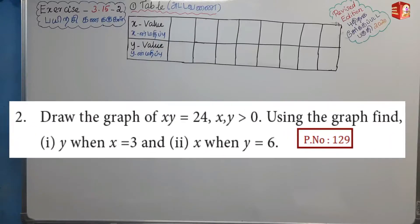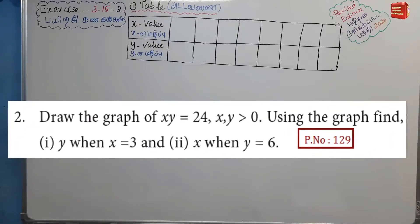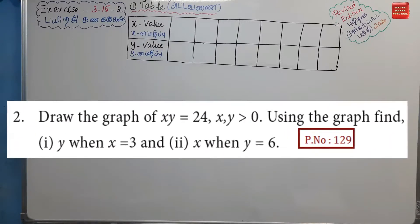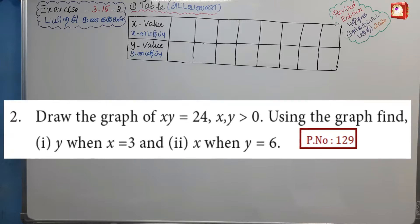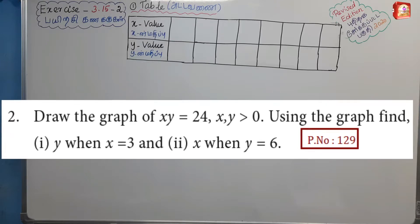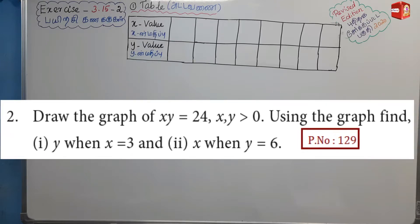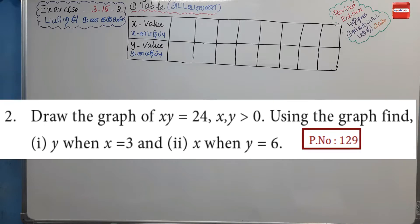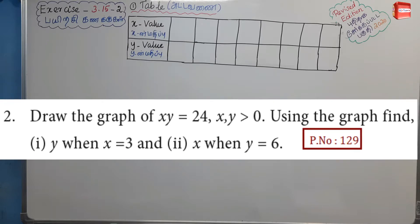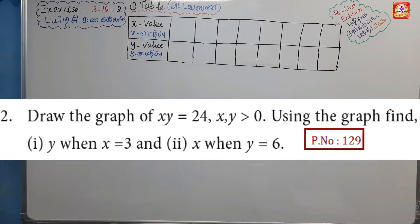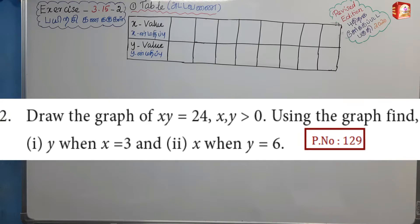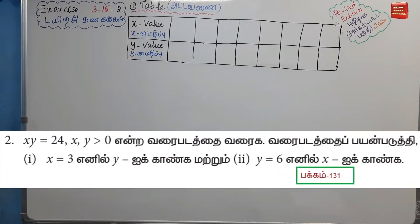Problem 3.15, number 2: Draw the graph of xy equal to 24, with x and y greater than 0. Using the graph, find: first, y when x equals 3; and second, x when y equals 6.